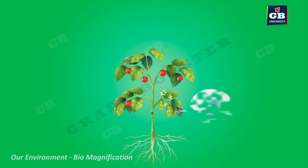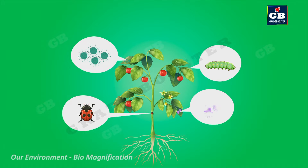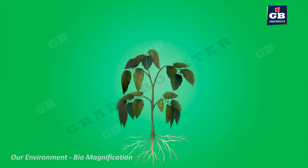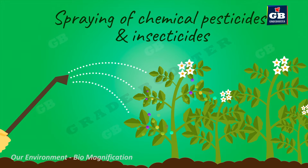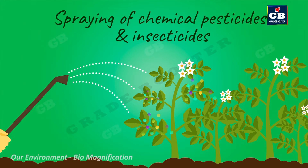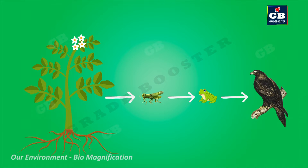We all know that bacteria, viruses and insects attack the plants quite often. If these pests and insects are not controlled, they make the plants weak and sometimes they may kill the plants. That is why in agricultural fields, plants are sprayed with chemical pesticides and insecticides. These pesticides may enter the food chains and cause many problems. Now let us see how these poisonous chemicals enter the food chains.